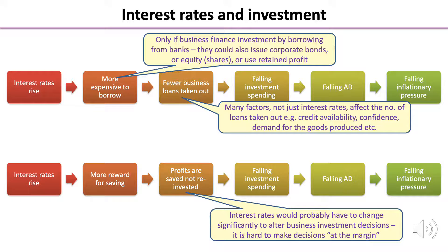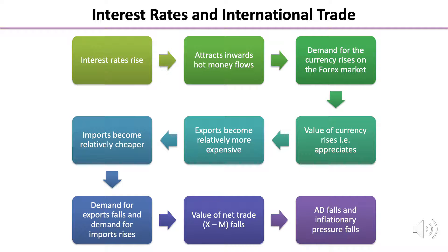Our second evaluation point on business investment comes from questioning the second logic chain. We said interest rates rising gives a greater reward for saving, so profits are saved and not reinvested. However, interest rates would probably have to change significantly to alter business investment decisions, as it's hard to make decisions at the margin and there are many other factors involved in investment decision-making beyond just interest rates. Here's a third transmission mechanism — the impact of a change in interest rates on international trade and consequently inflationary pressure. Pause the video and re-familiarise yourself with this chain of reasoning.